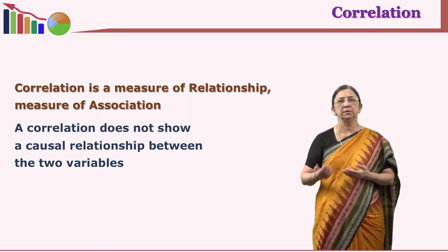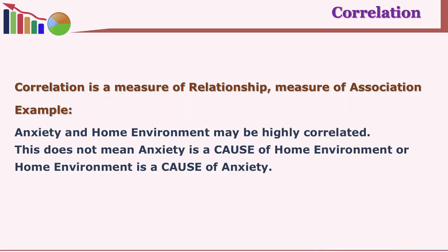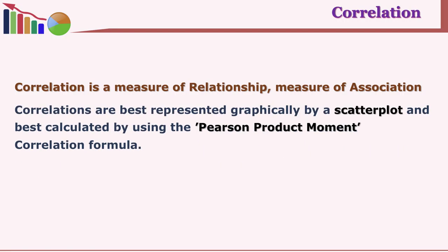For example, with anxiety and home environment: even if you find there is a positive or negative relationship, it does not tell you that anxiety is a cause of home environment, nor that home environment is a cause of creating anxiety. Please understand this differentiation is very important. The relationship between two variables can be shown graphically using scatter plots.